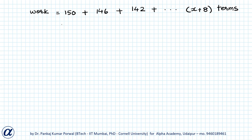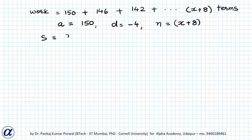Here I have: a equals 150, d equals minus four, and number of terms n equals x plus eight. To find the sum, I use the formula: Sum = (n/2) × [2a + (n − 1) × d].